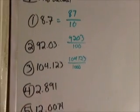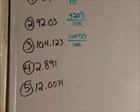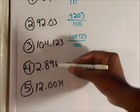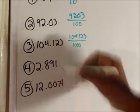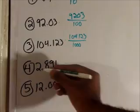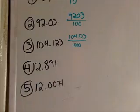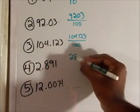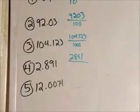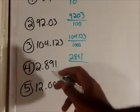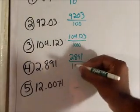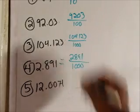Let's look at the next one. 2 and 891 thousandths. So every number here gets represented: 2, 8, 9, 1. And we said 891 thousandths, so that should be a thousand in the bottom place.